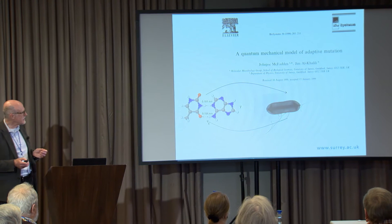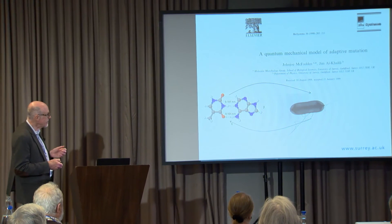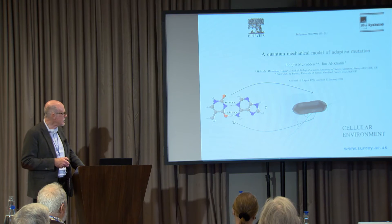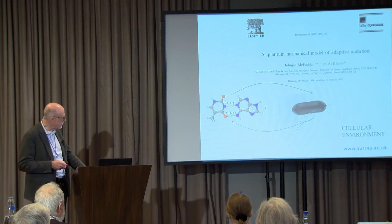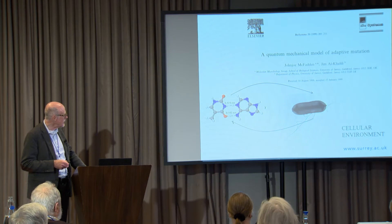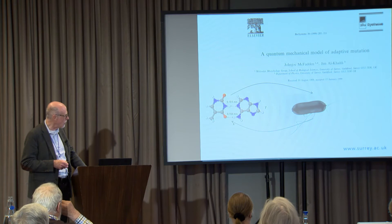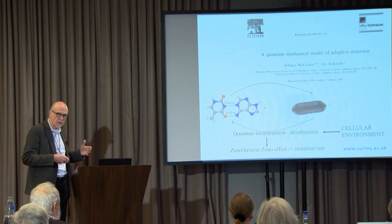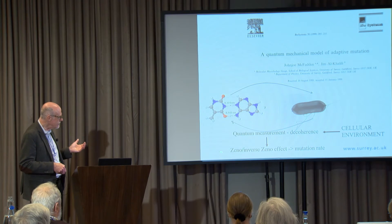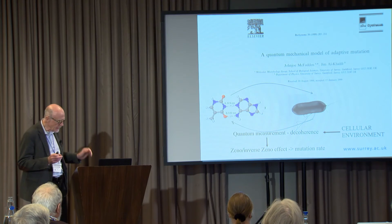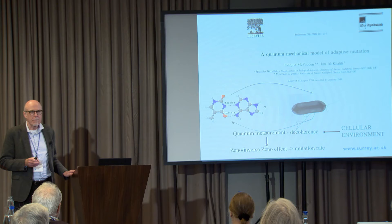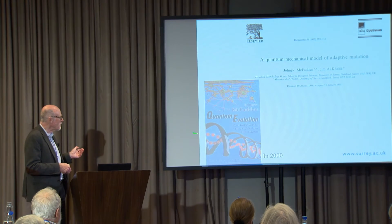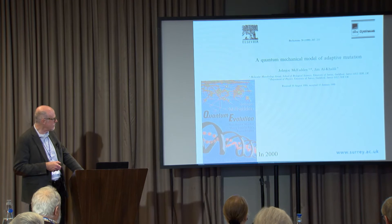I gave a talk at the physics department at Surrey on this - it was very skeptically received - but Jim Al-Khalili was in the audience and together we worked out an idea. Essentially we were making the case that this transition from the normal to the tautomeric form may be influenced by the cellular environment, producing some kind of quantum measurement - relying on ideas about quantum measurement producing something like an inverse Zeno effect to fix the mutation. It was very hand-wavy, I'll admit.